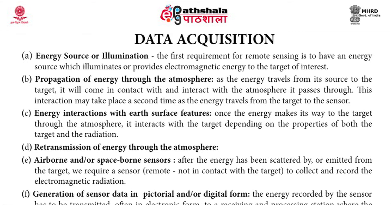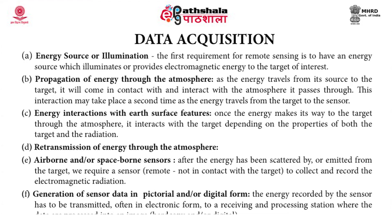The next step is when the energy reaches airborne or spaceborne sensors. After the energy has been scattered or emitted from the target, we require a sensor that is remote to collect and record the electromagnetic radiations. The energy recorded by the sensor has to be transmitted, often in electronic form, to a receiving and processing station where the data are processed into an image — this could be a hard copy or a digital image.